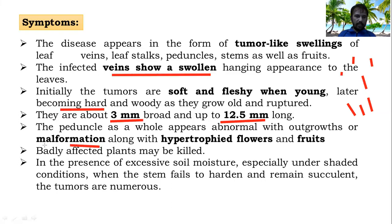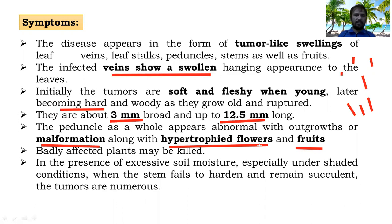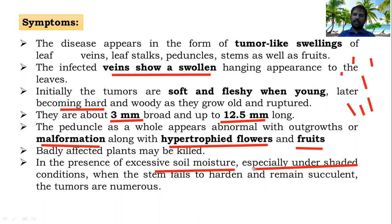Tumors are seen on stems, leaves, and all aerial parts. They also cause malformation in the flower region due to hypertrophy conditions, so flowers become hypertrophied. If the disease comes in a later stage, fruit also becomes hypertrophied. If it comes in an early stage, there is no fruit set and seed set, and severely infected plants may die. The disease generally occurs under heavy moisture conditions when the coriander nursery is under heavy irrigation or there is a presence of heavy moisture.